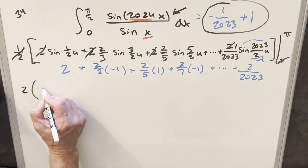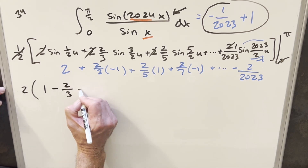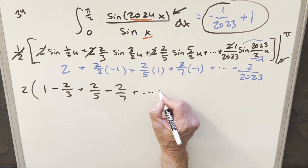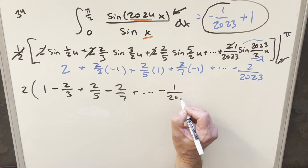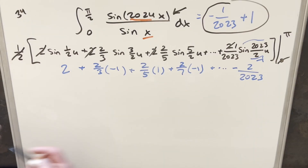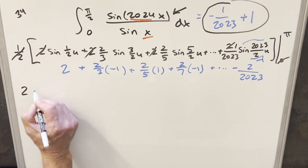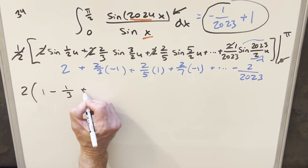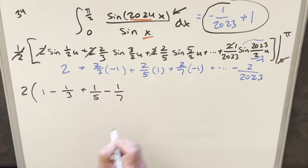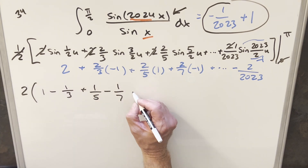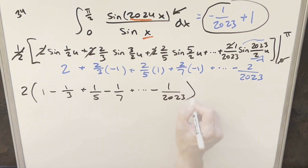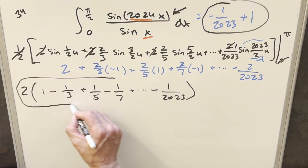Taking 2 out of everything and factoring it in front, the whole thing cleans up to: 2 times (1 − 1/3 + 1/5 − 1/7 + ... + 1/2023). This is the exact final solution — a long alternating sum with odd numbers in the denominators up to 2023. It's a bit ugly, so let's see if we can get a nice estimate.